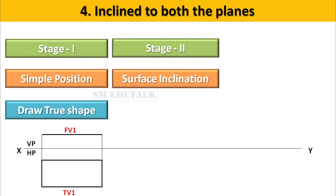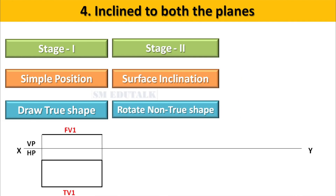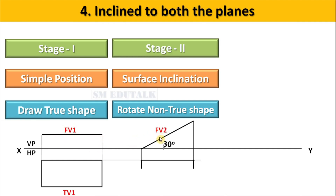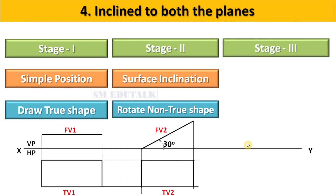Stage 2 represents the surface inclination of the object. Here, the view which represents a non-true shape in stage 1 should be rotated and drawn in stage 2. In this example, front view has got the non-true shape. So it is rotated and drawn as front view in stage 2. Then stage 2 front view and stage 1 top view are projected to get the stage 2 top view. Once front view and top view have finished in stage 2, then we enter into stage 3.